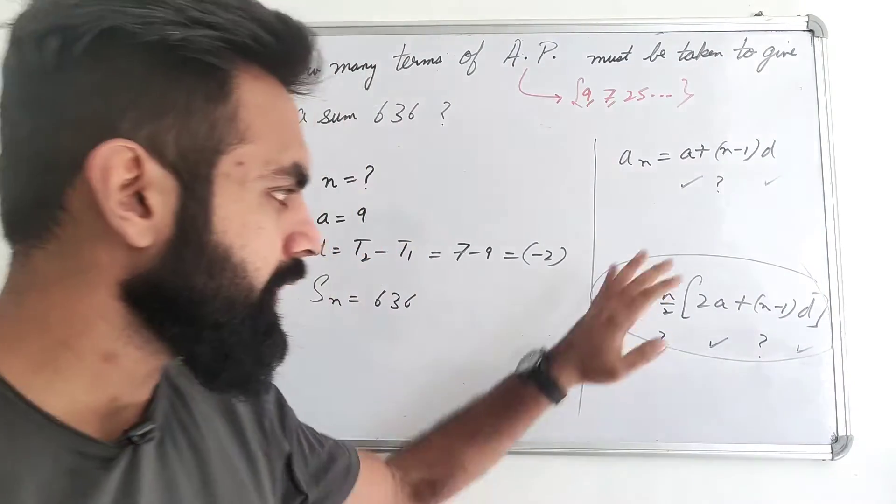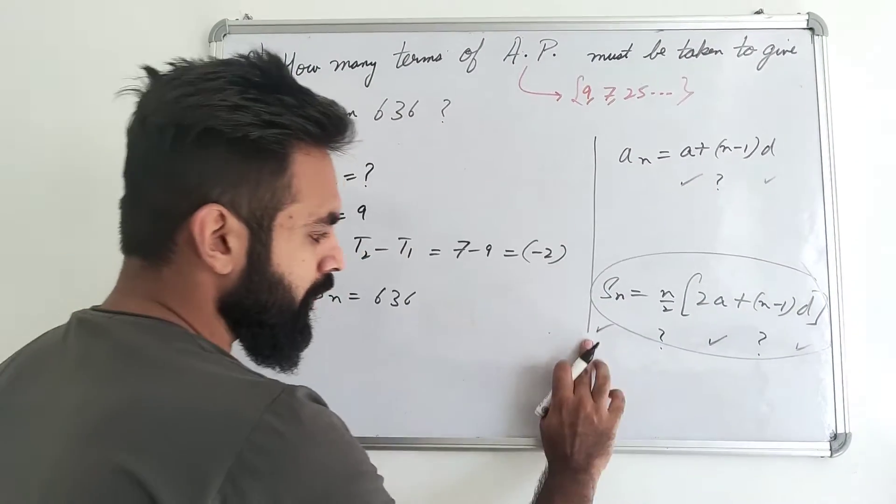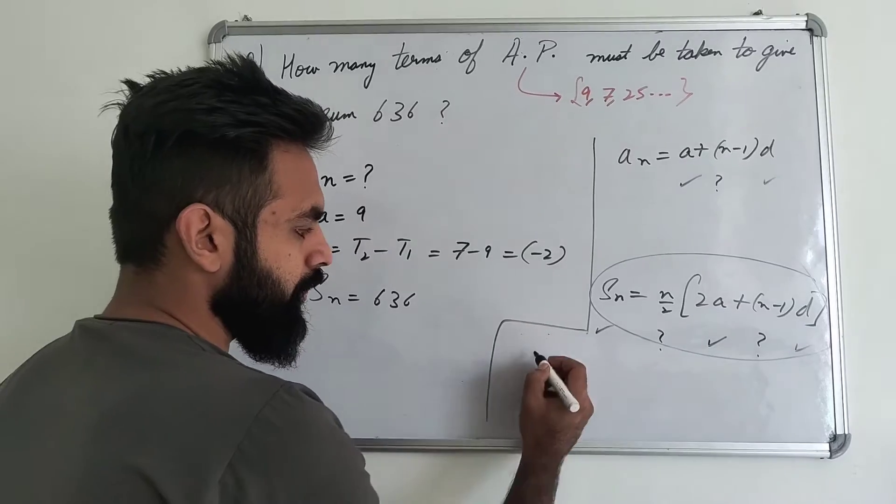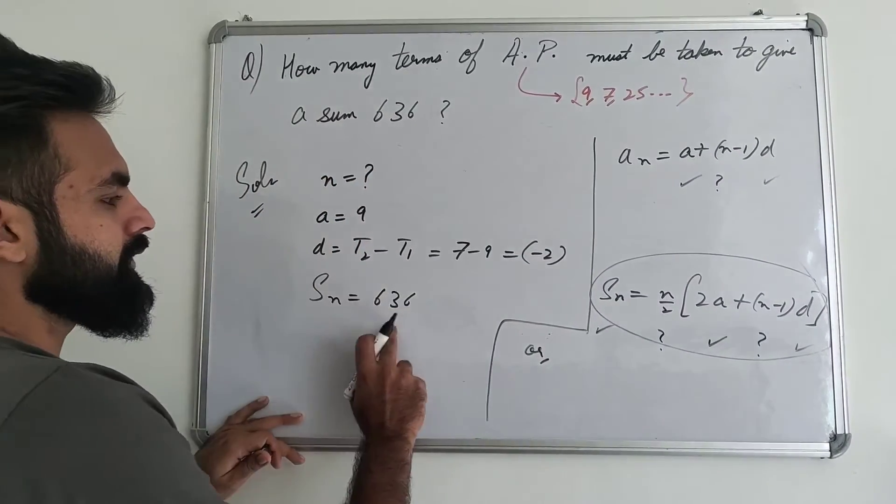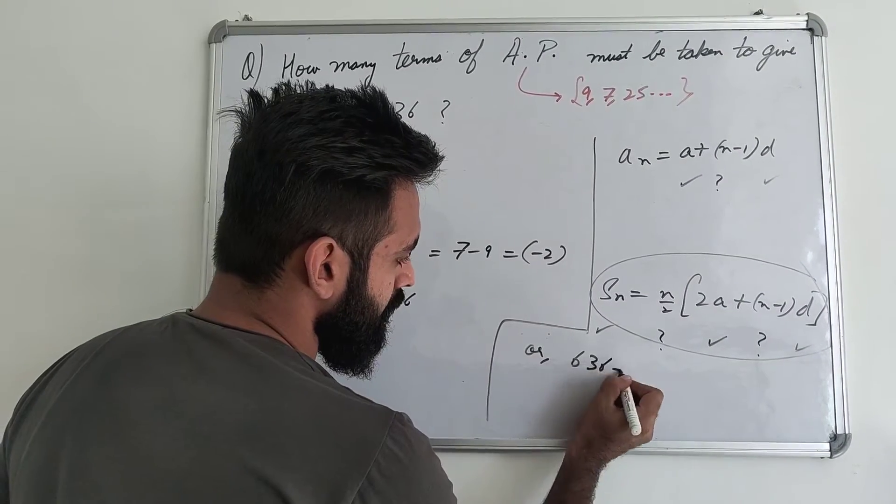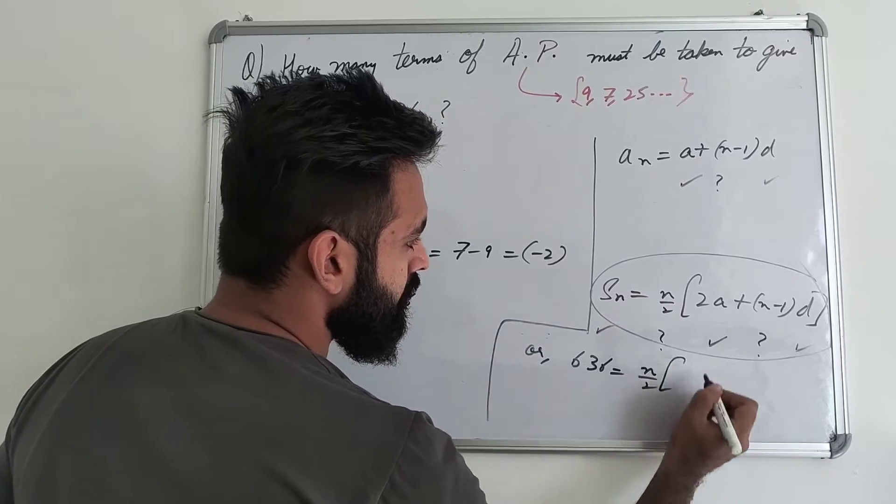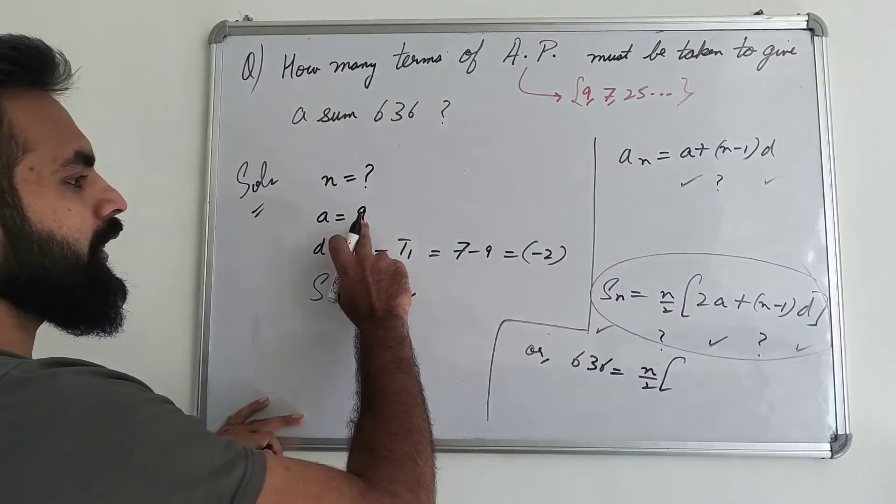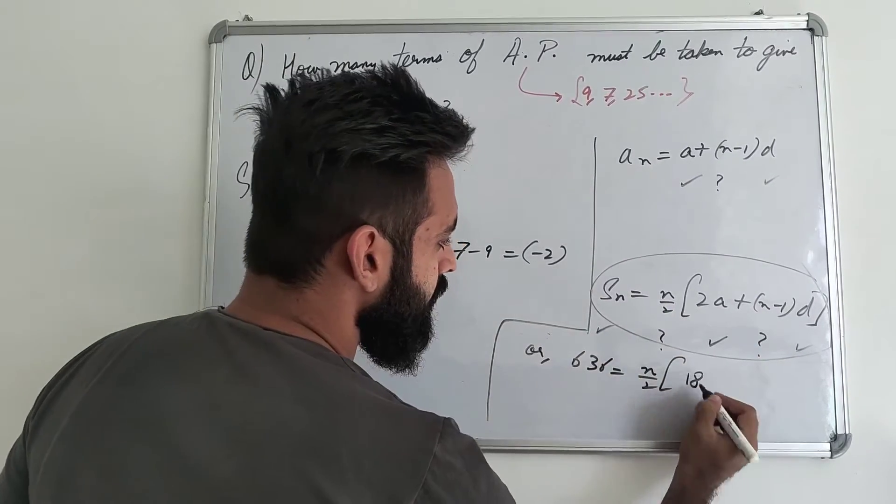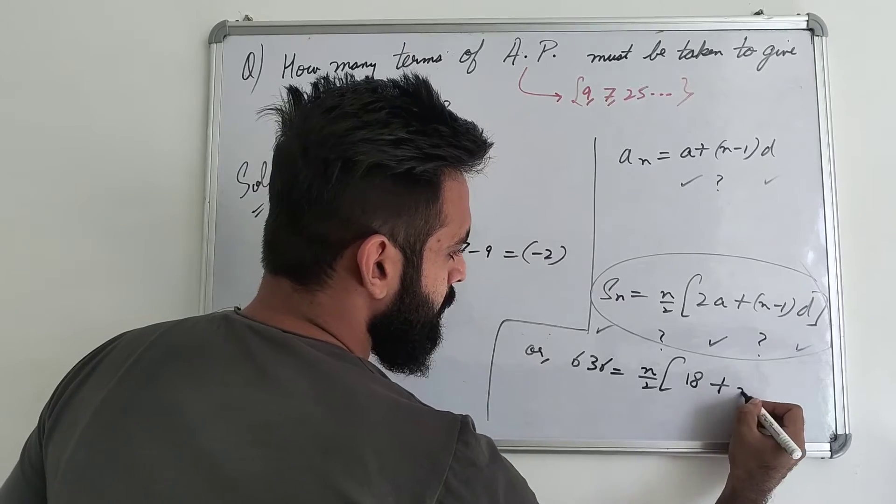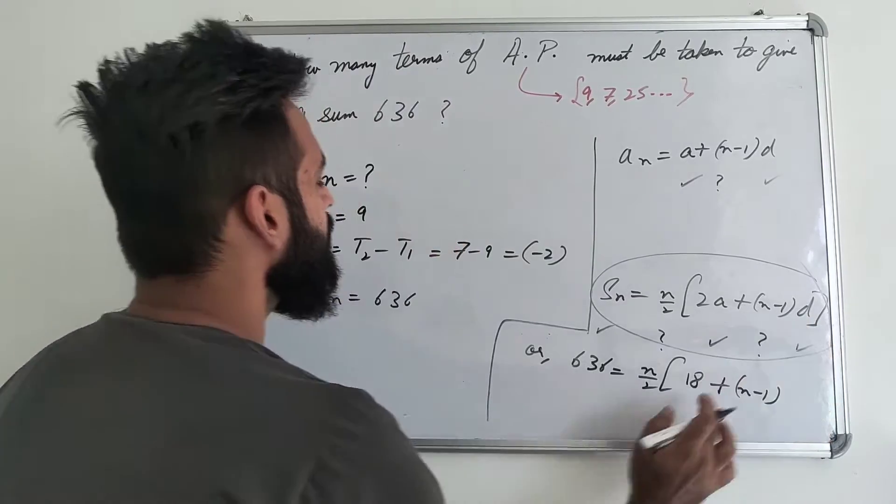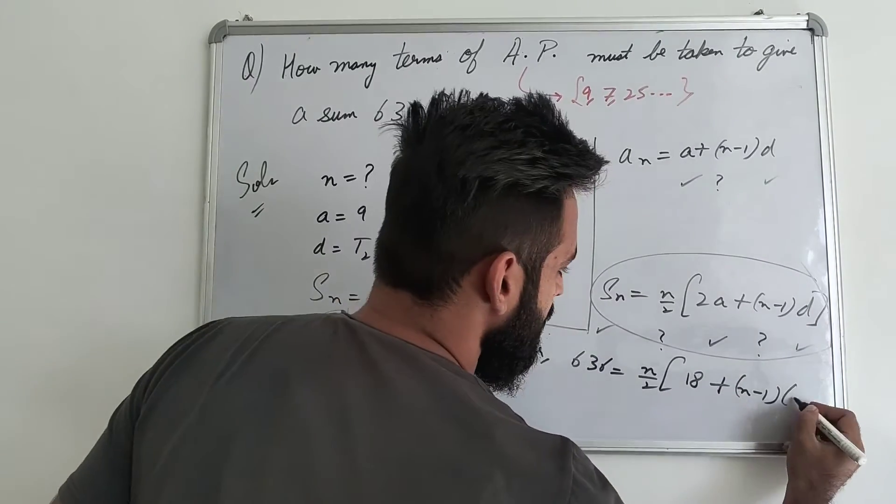Now, what are you doing? You will add values to this equation. I will make you an equation, and you will solve the value of N. Where you will add, 636. N by 2, as it is, 2 into A. Where you will add 9. So, 2 into 9 is 18. Plus N minus 1, as it is, because N is missing, D value is minus 2. So here will be minus 2.